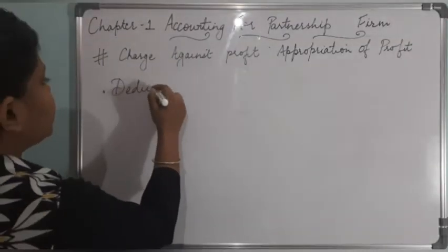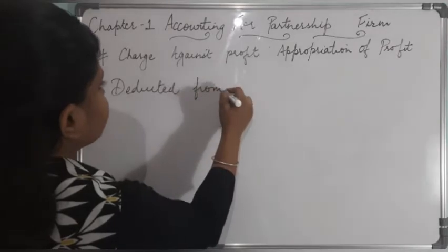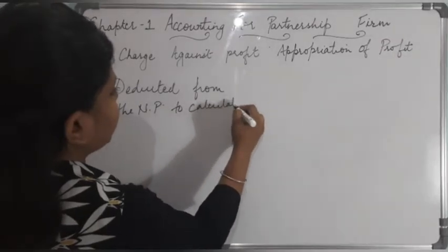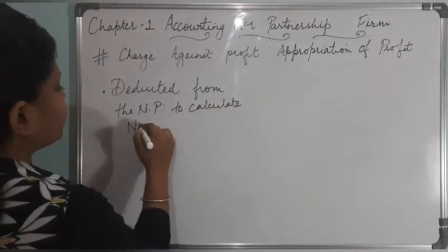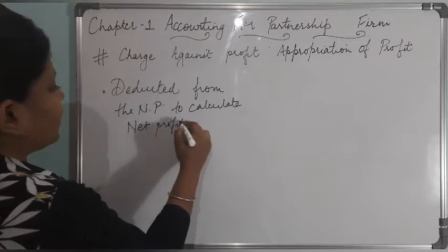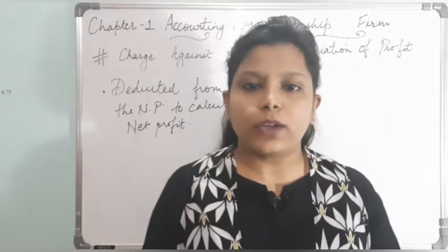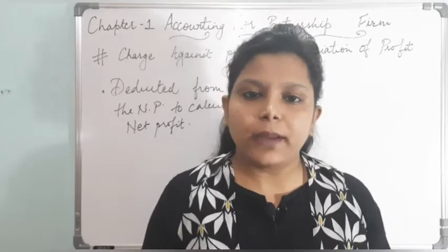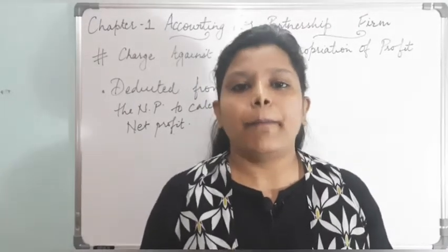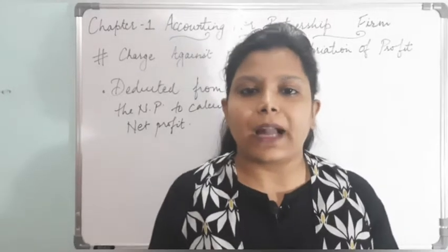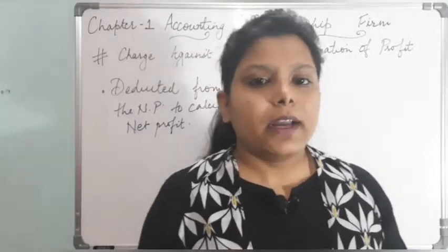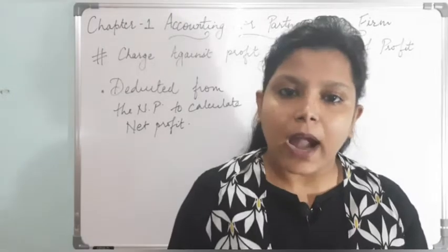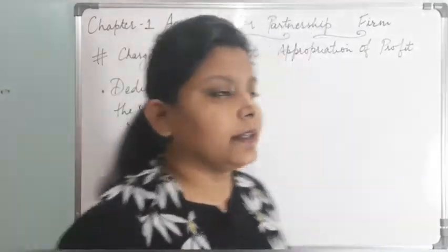Charge against profit will be deducted from the net profit to calculate the actual net profit. While preparing the profit and loss appropriation account, we first write down the balancing figure. If it is a profit, we write it on the credit side as 'by profit and loss account (net profit)'. But if some items are considered as charge against profit, we have to deduct those items from that net profit.